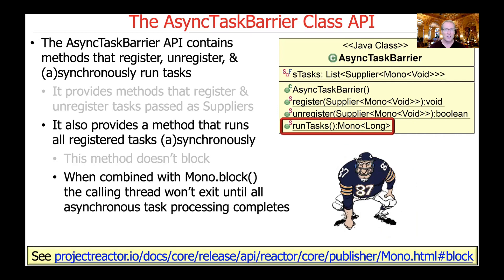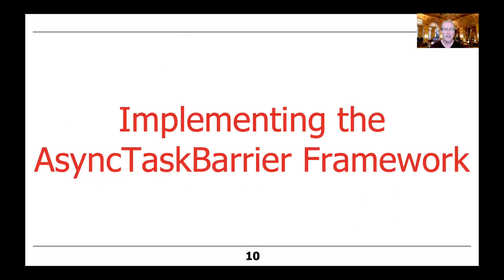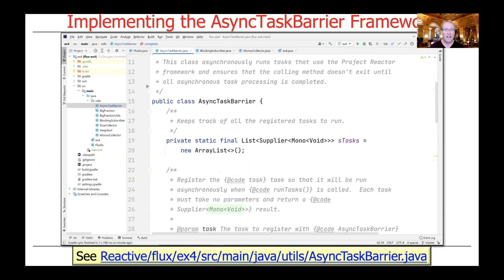Or you can take the result that comes back from run tasks and call the block method, or one of the block operators defined on Mono, in order to block the calling thread so it won't exit until all the asynchronous task processing is finished. This turns out to be quite useful for our various test programs. If you want to find the implementation of this asynchronous task barrier framework, take a look at the link at the bottom of the slide, and now we're going to walk through the code itself.